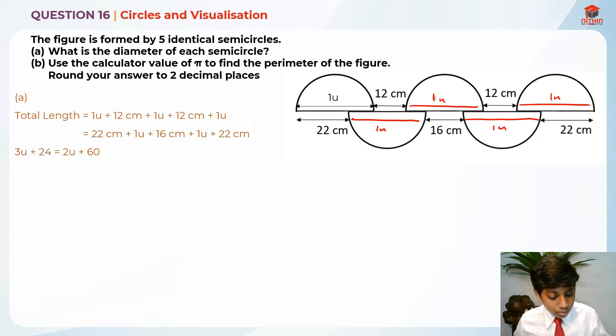So 2 units becomes minus 2 units on this side, giving us 3 units minus 2 units. And plus 24 becomes minus 24, so 60 minus 24. This gives us 3 units minus 2 units equals 60 minus 24. We need to find 1 unit, which equals 36. So 36 cm is the answer for part A.